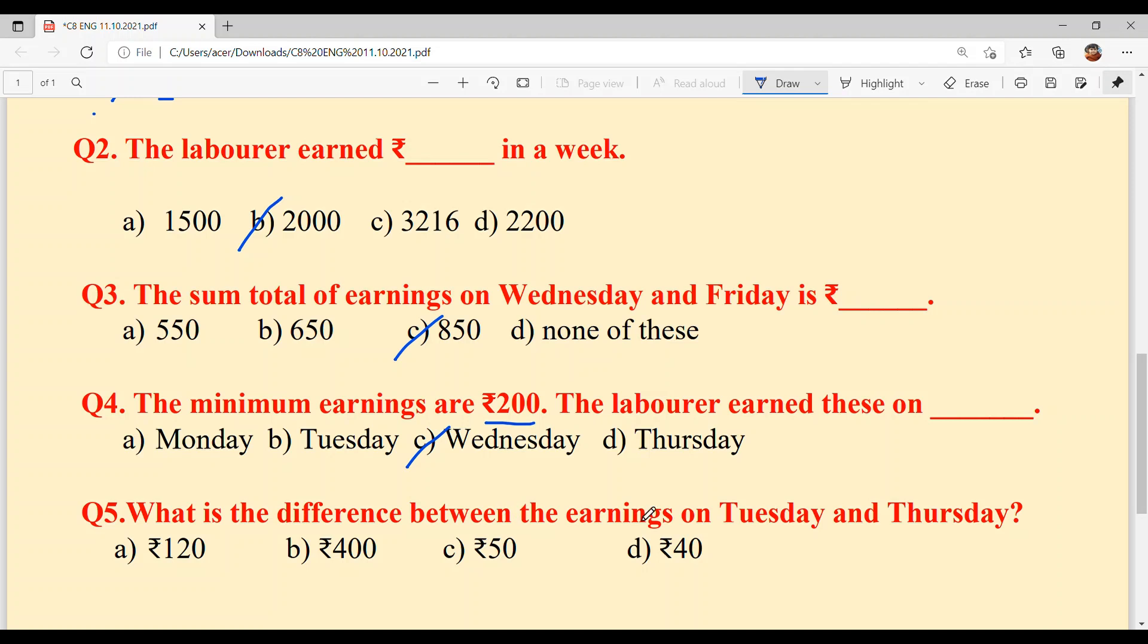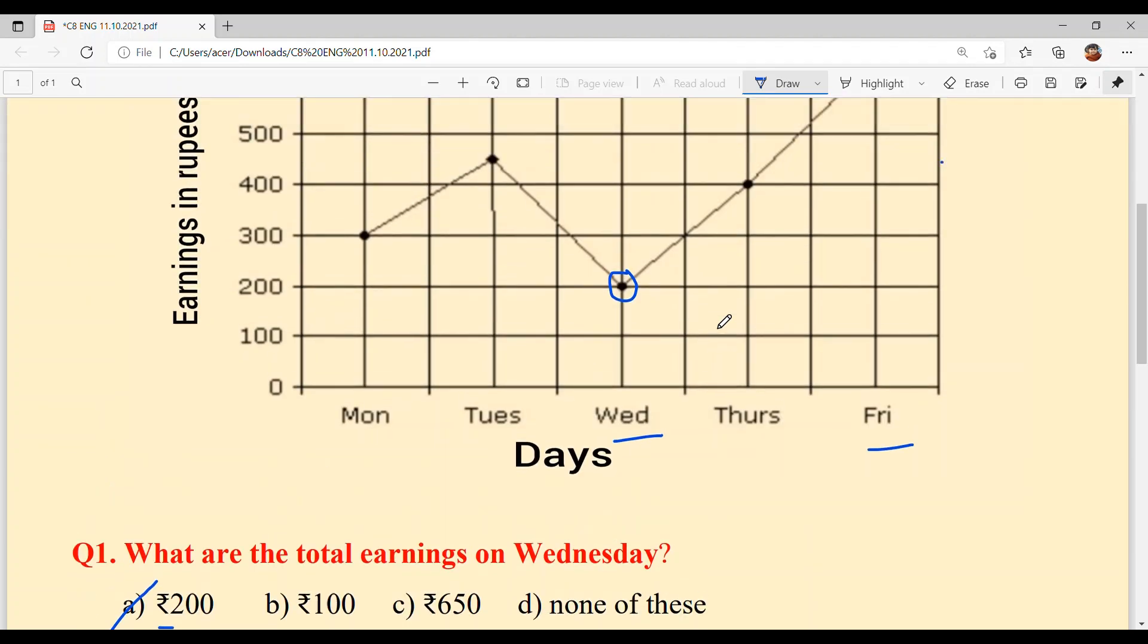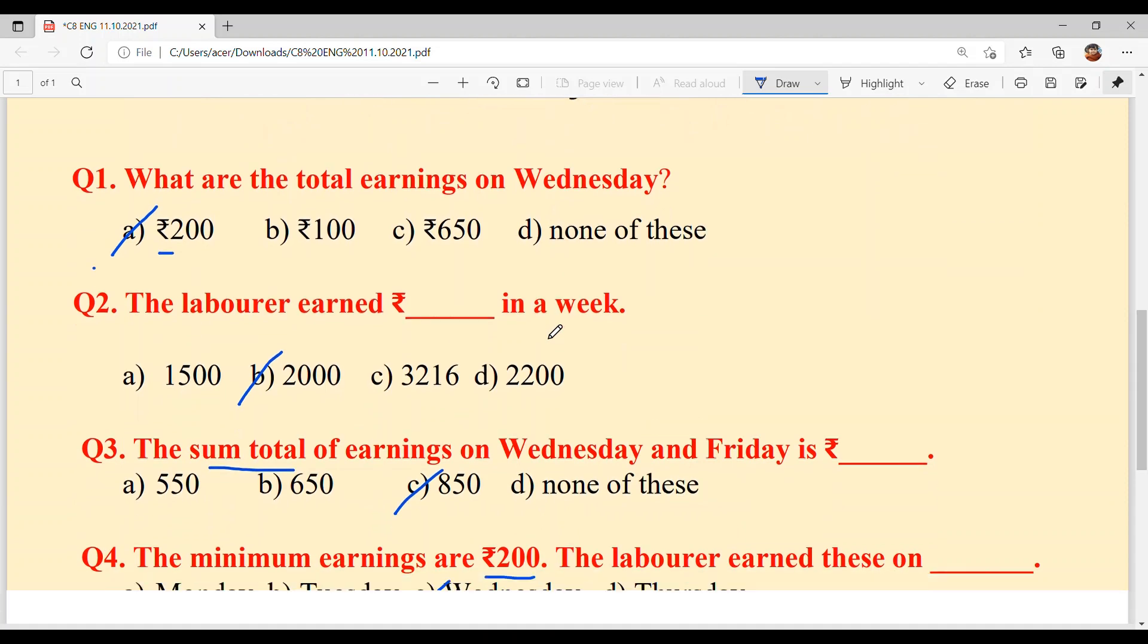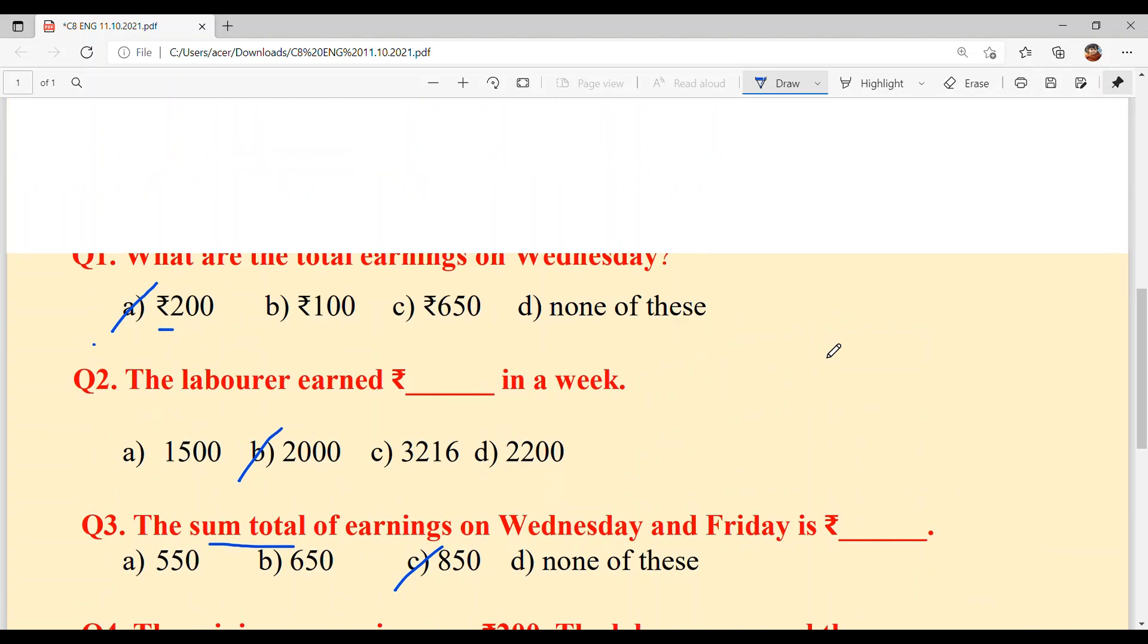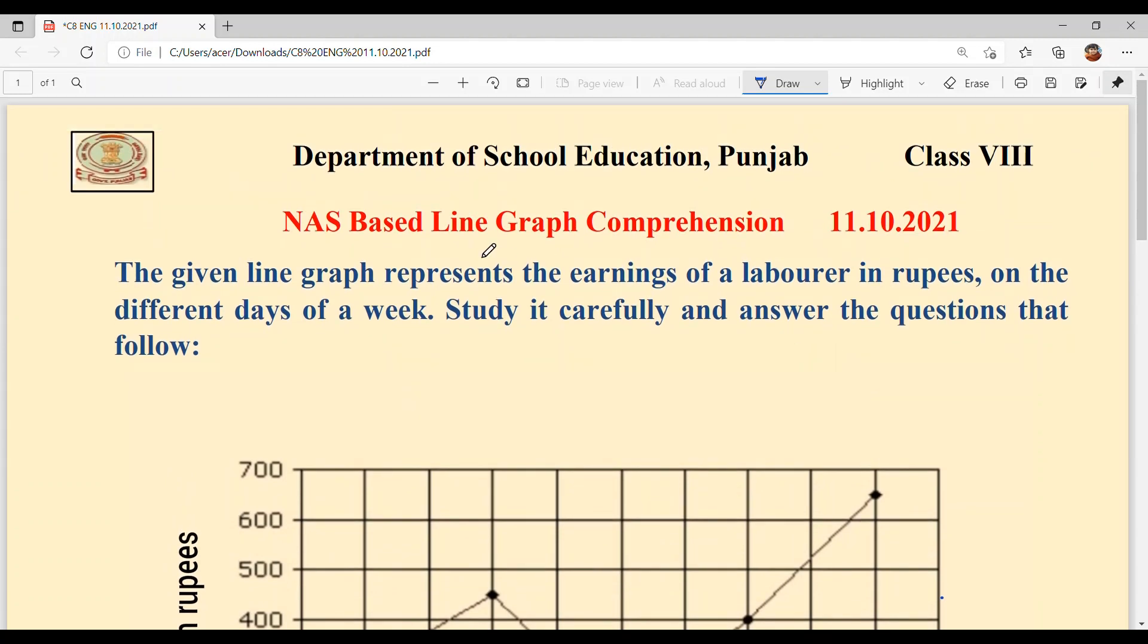And last is, what is the difference between the earnings on Tuesday and Thursday? Earlier we calculated sum total by adding. Here, difference is being asked between two days, Tuesday and Thursday. Let's see, Thursday he earned 400 rupees, Tuesday also 400. This means 450 minus 400. Answer is option C, rupees 50. And with this, our today's line graph comprehension is solved and it was very much easy.